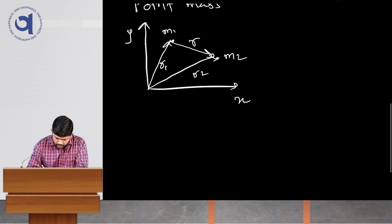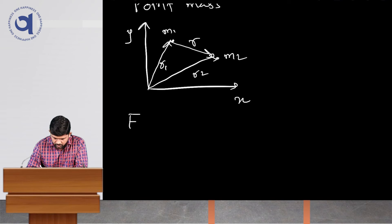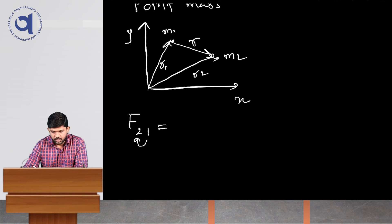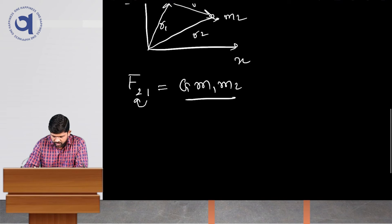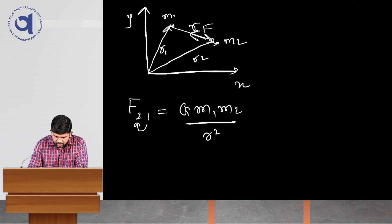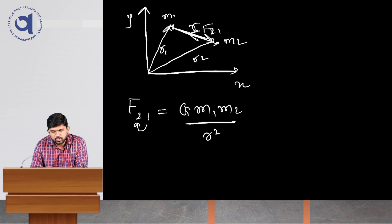We write the force F with subscript 21, meaning the force acting due to mass 1 on mass 2. The magnitude is G M1 M2 divided by R squared. Now for direction: mass M1 is exerting force on mass M2 in this direction, which is the direction of F21. We observe from the figure that the position vector R points in the opposite direction to F21.